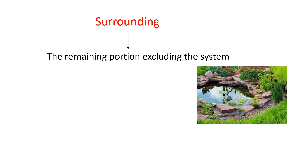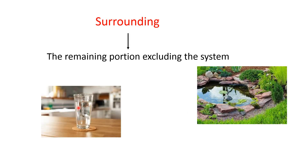Now, coming to surroundings. What are surroundings? Just now we saw that the water in the pond is under our investigation — that is our system. This water body or pond water is surrounded by all these stones, greenery, and mud. All these things together are known as the surroundings. In the earlier example of water in a glass, the water is our system. Then the glass, the mat, the table, and all other things in the vicinity are our surroundings.